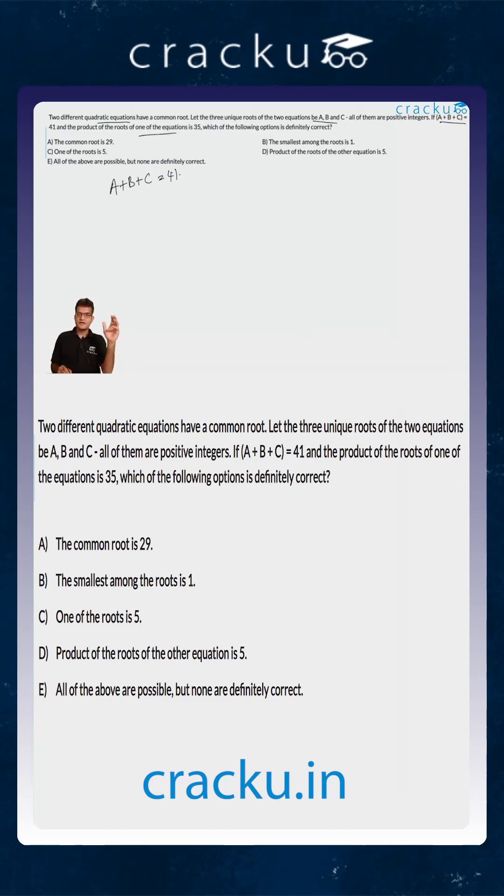We can assume that the roots of one equation are b and c, and the roots of the other equation are a and b, where b is the common root. This is valid because nothing specific is mentioned about a, b, and c. We're just told that their sum is 41 and that b times c equals 35.